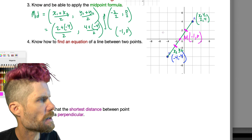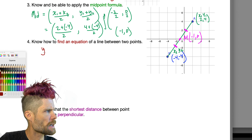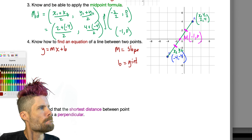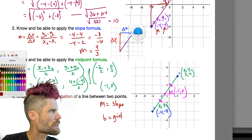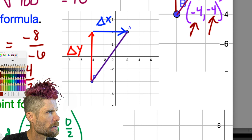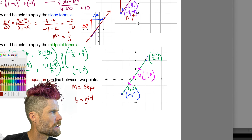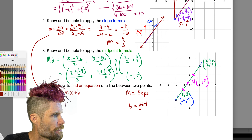Objective four: find the equation of a line between two points. The equation of a line is y equals mx plus b, where m is the slope and b is the y-intercept — where it intersects the y-axis. Using the same line, we first need to calculate the slope, which we already did in part two: the slope is 4/3.